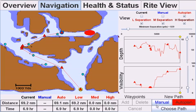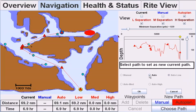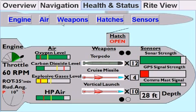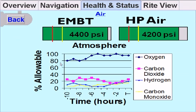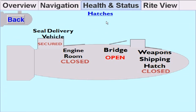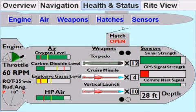While path planning is important, another feature of the MSAT allows the commander to monitor multiple systems through the Health and Status tab. The high-level information of these systems is combined in the MSAT, tracking information to monitor for off-nominal situations. In the first section of the Health and Status tab, high-level information is shown. Using the buttons at the top, the operator can view more detailed information. From here, commanders can monitor engine parameters, air levels, weapons and their positions on the rack, hatches, and sensor strength.